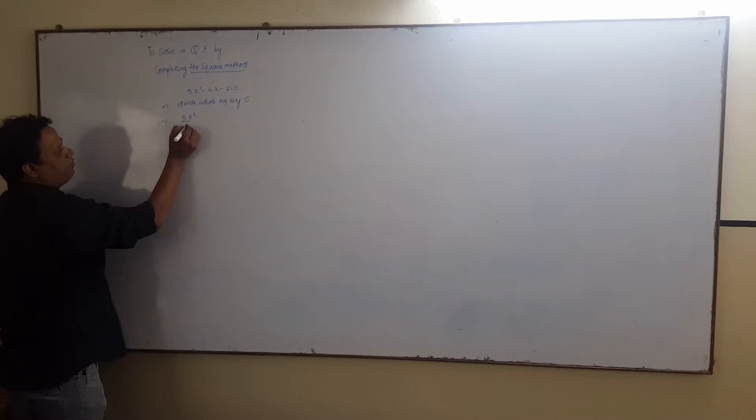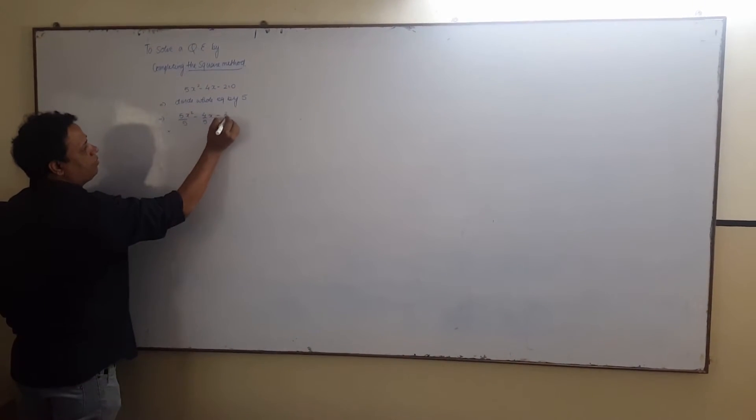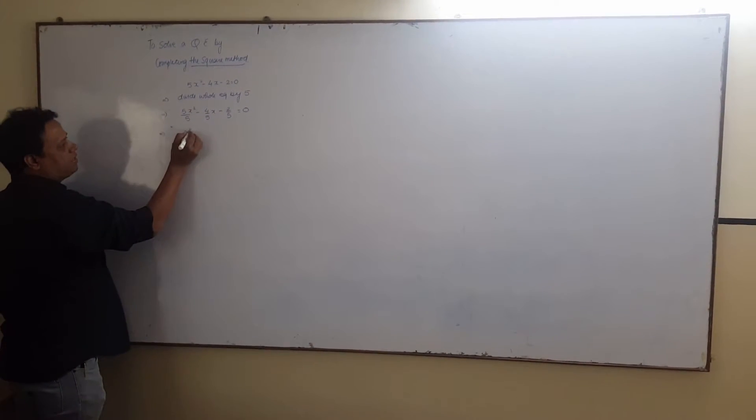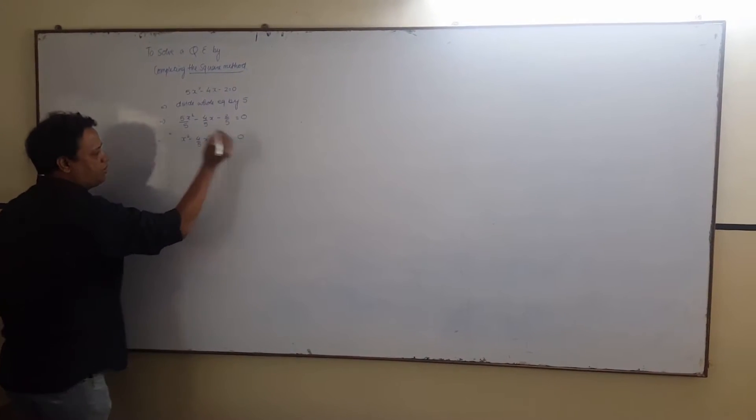5x square upon 5 minus 4 upon 5x minus 2 upon 5 equals to 0. So, this will give us x square minus 4 upon 5x minus 2 upon 5 equals to 0.